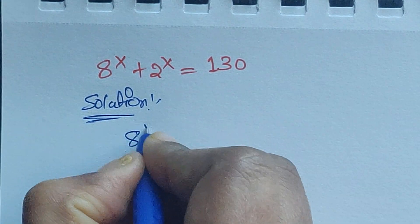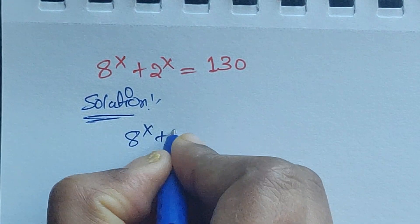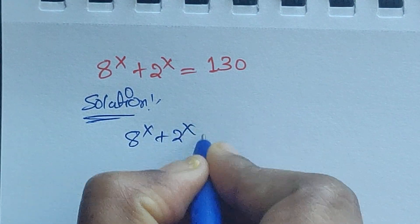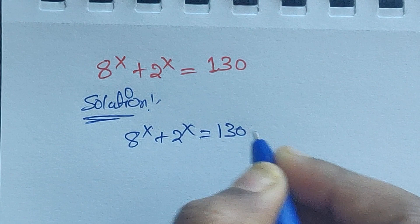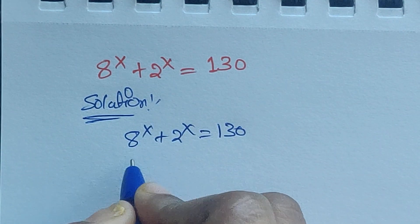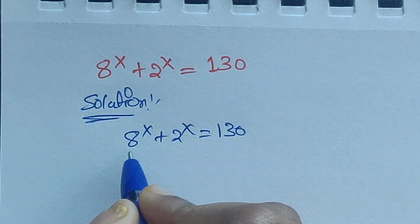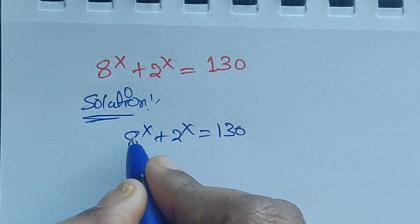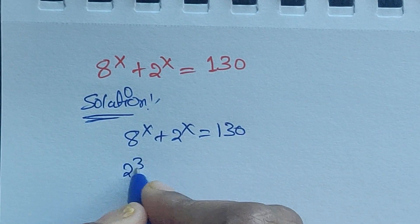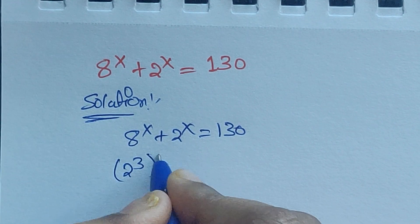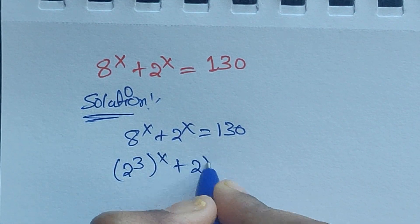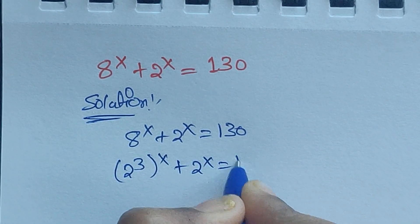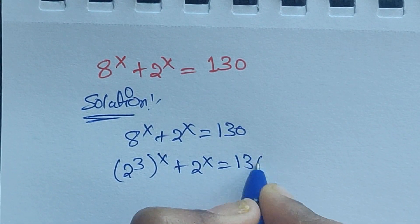8 to the power of x plus 2 to the power of x equals 130. We can rewrite 8 as 2 to the power of 3, so this becomes 2 to the power of 3, whole to the power of x, plus 2 to the power of x, equals 130.